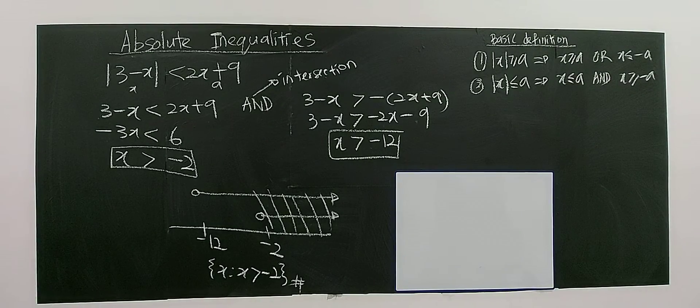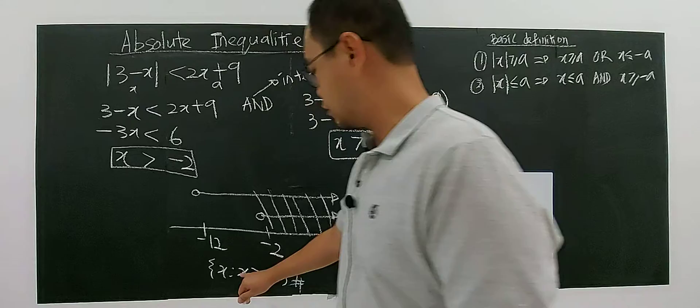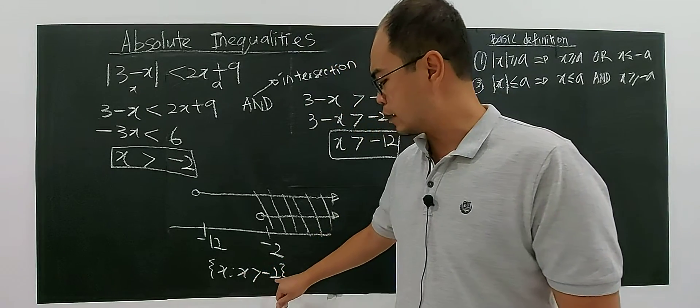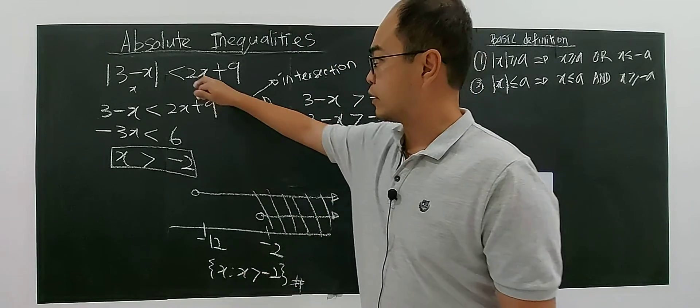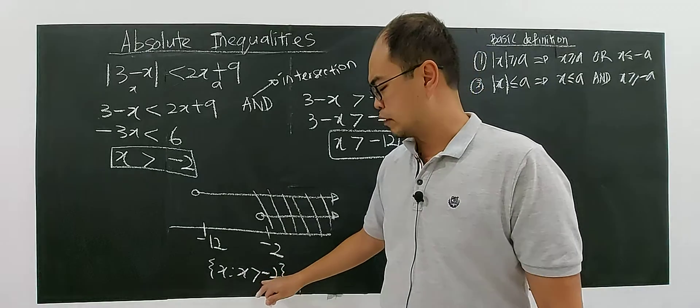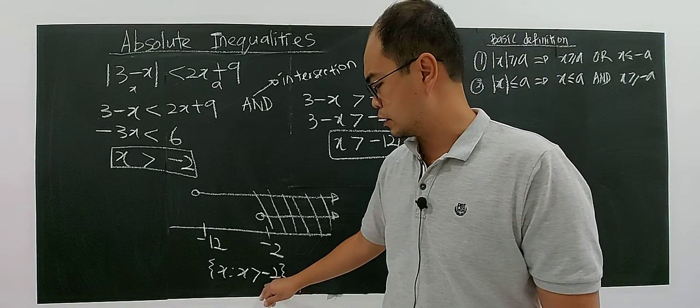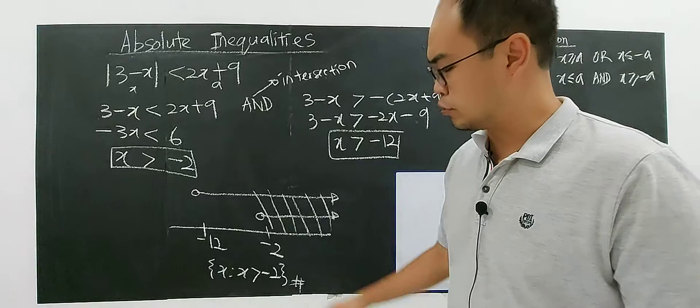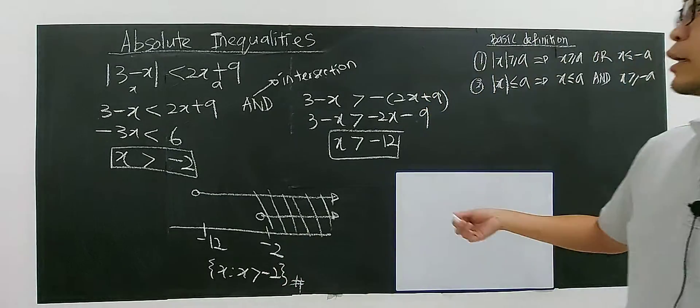So you can double check your solution, whether it's correct or not. Because any result, any number that greater than negative 2 will satisfy this inequality. Let's choose a number. For example, I choose 3. 3 is in the range, right? Any number you like.